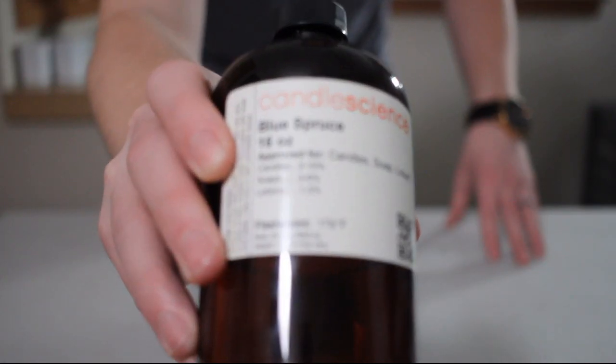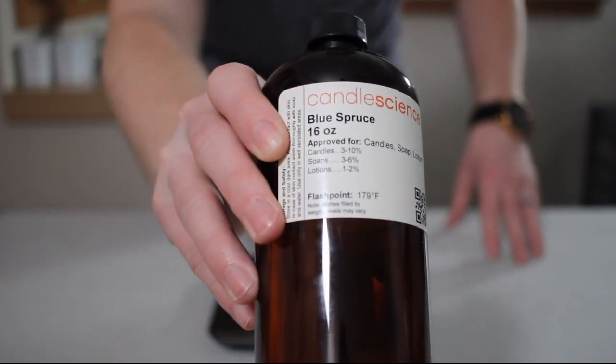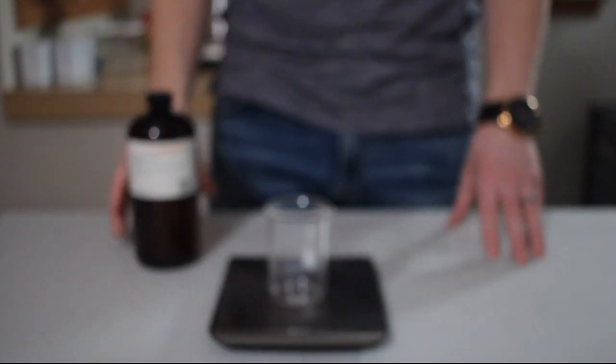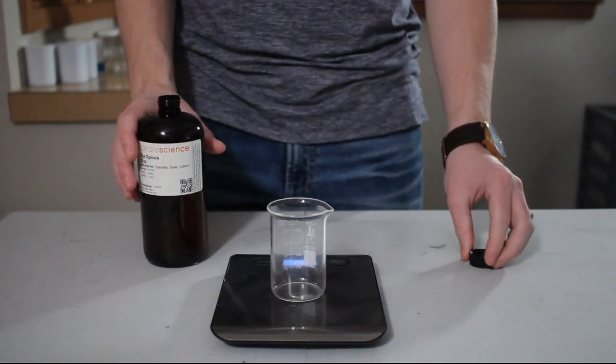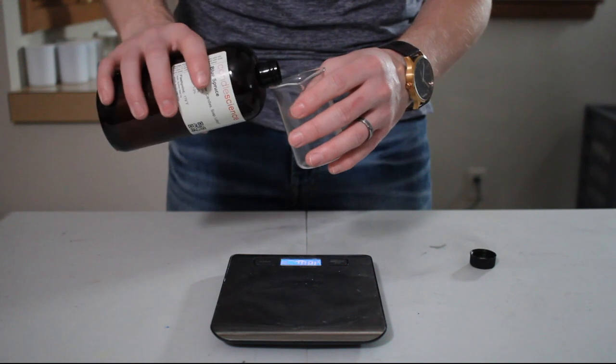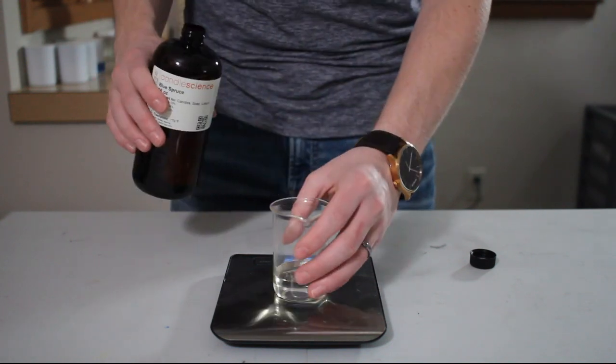We're going to use Blue Spruce from Candle Science today. A 6% fragrance load means we're going to measure out 12 grams of fragrance for this batch which I'll carefully siphon into this glass measuring beaker.